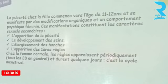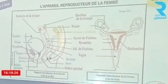Les règles apparaissent périodiquement tous les 28 jours en général, et durent 4 à 5 jours, formant ce qu'on appelle le cycle menstruel. Par comparaison avec la fonction de reproduction chez l'homme, on va voir l'organisation de l'appareil reproducteur chez le sexe féminin.